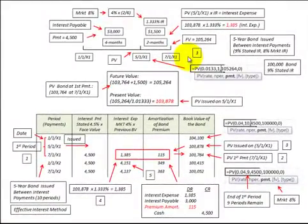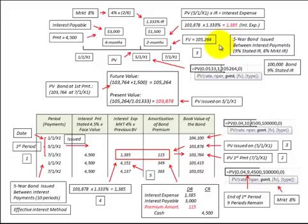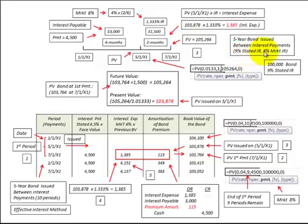In this presentation we're going to look at a bond issued or sold between interest dates, and we're going to use the effective rate of interest method for amortizing the bond. Our example is for a five-year bond with a $100,000 face value. It has 10 semi-annual payments of $4,500 each, based on a 9% stated rate of interest annually, or 4.5% per period. We'll calculate interest expense based on a market rate of 8% per year, or 4% per period.